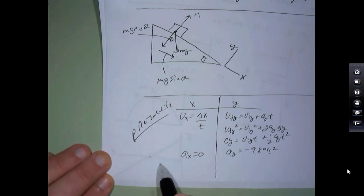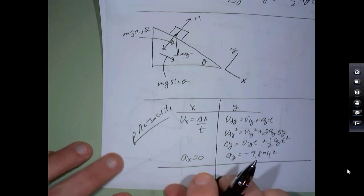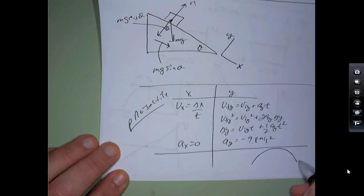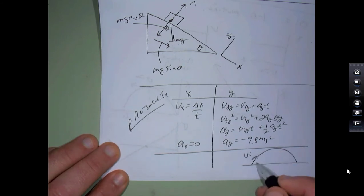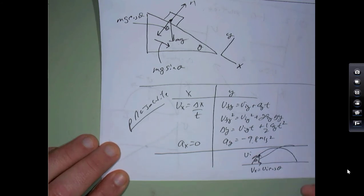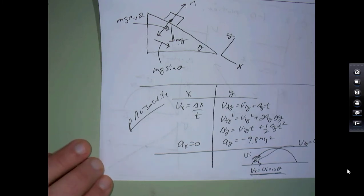We did a whole bunch of problems on projectile motion. The other special case is when you go from one level back to the same level. The overall velocity at launch has components: v_x = v_0·cosθ and v_iy = v_0·sinθ. The x velocity doesn't change — it's constant. The y velocity changes: at the highest point, the velocity in y is zero, and on the way down it becomes negative.